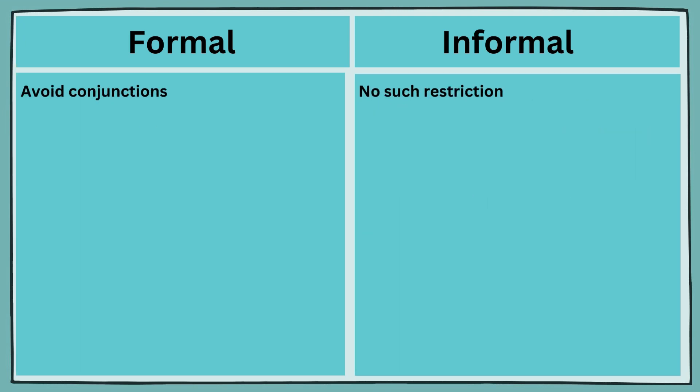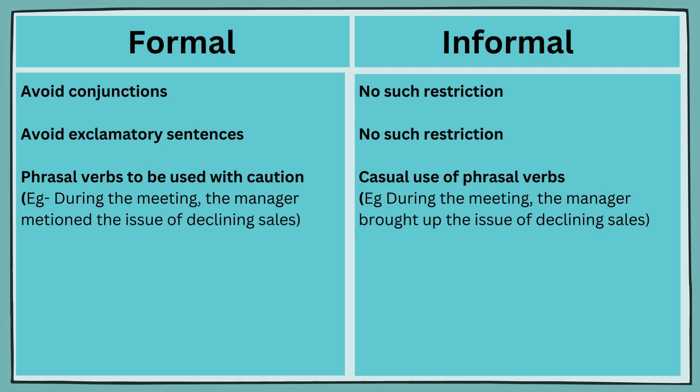In formal writing, sentences do not begin with conjunctions. Also, it is important to avoid exclamatory sentences as they evoke emotions. Phrasal verbs have multiple meanings and therefore should be used with caution in formal writing. For example, 'During the meeting, the manager mentioned the issue of declining sales' is formal, whereas 'During the meeting, the manager brought up the issue of declining sales' is informal.